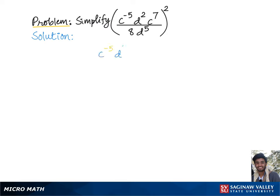To simplify c to the negative 5 times d squared times c to the 7th over 8 times d to the 5th, and the whole group squared. Let's begin by working on exponents with common base c using rule 1, according to which we'll get common base c raised to the exponents added, that is negative 5 plus 7 over 8.